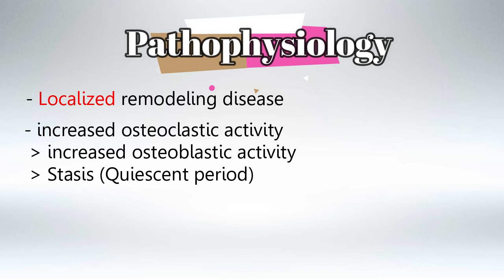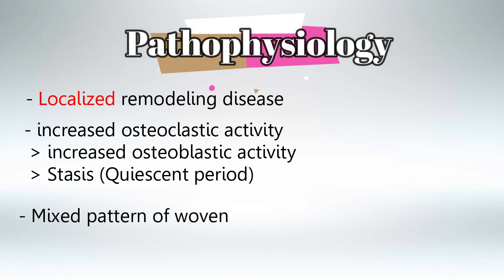So if we take a biopsy of Paget Disease bone we might find increased activity of osteoclasts, or increased activity of osteoblasts, or both — which is the junction period between them — or actually no activity of either one. The biopsy findings will depend on the stage of the disease. But in general it's highly characteristic that we will find a pattern of mixed woven and lamellar bone in Paget Disease.